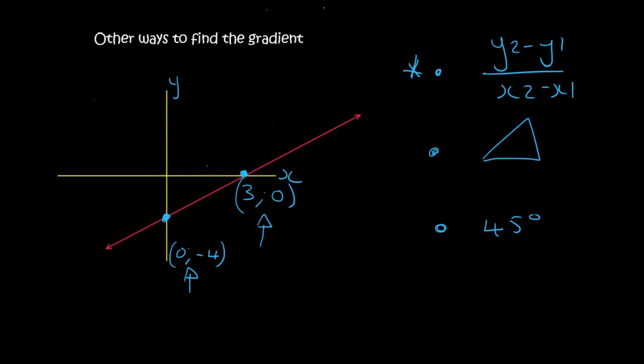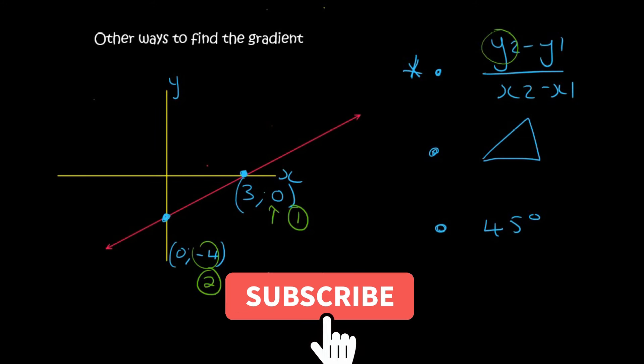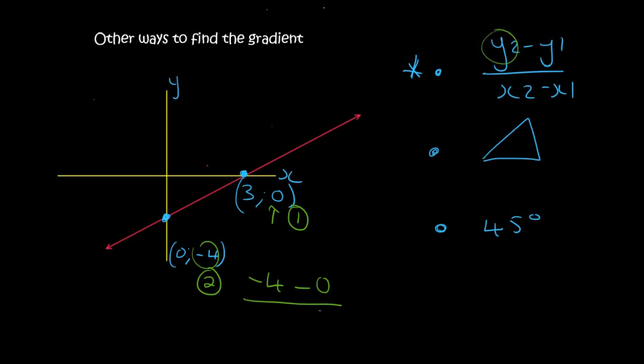So now we have the coordinates, so we could use the formula. So I'm going to call this point down here point number 2, and I'm going to call this one point number 1, and that's totally a random choice. So now we take the y value of point number 2, which is minus 4, then we say minus the y value of point number 1 is 0. Then the x value of point number 2 is 0, minus, and then the x value of point number 1 is 3. And so if you had to go for all that in on the calculator, you would end up with 4 over 3.